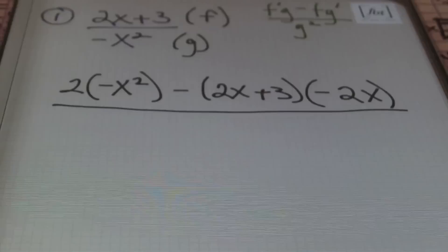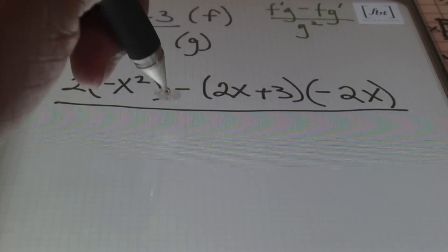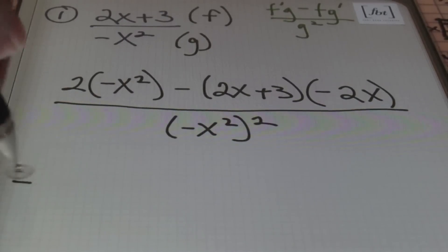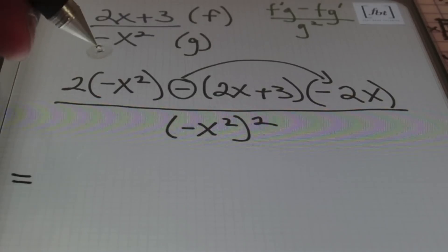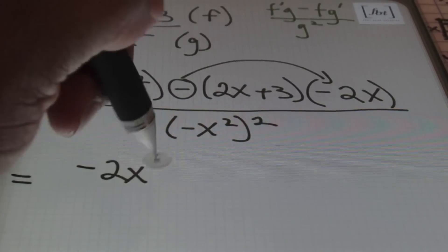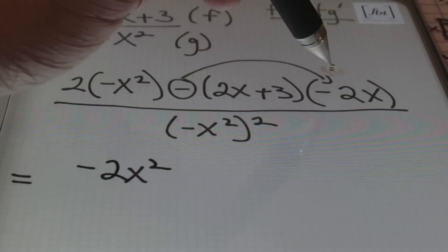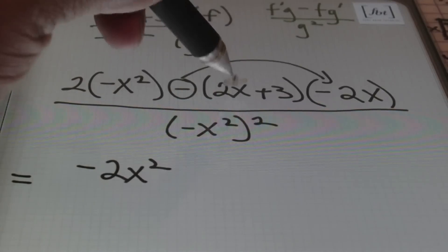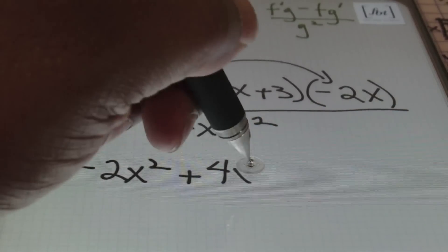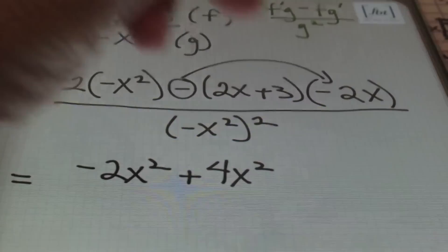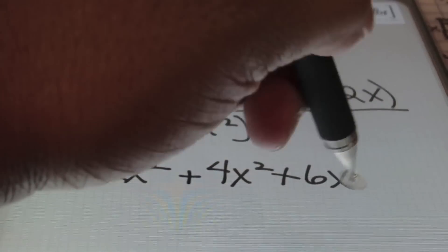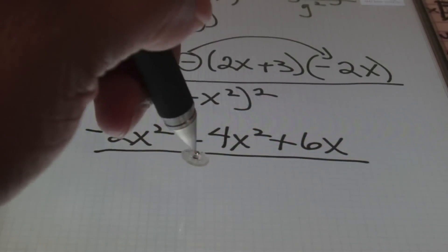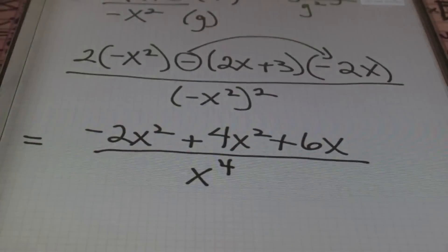All of this is going to be over the denominator squared, so I'll end up with negative x squared, squared. Multiplying 2 times negative x squared gives me negative 2x squared. This negative times negative 2x makes a positive 2x, which I distribute to the binomial: 2x times 2x is 4x squared, and 2x times 3 is 6x. The denominator, negative x squared squared, becomes x to the fourth power.